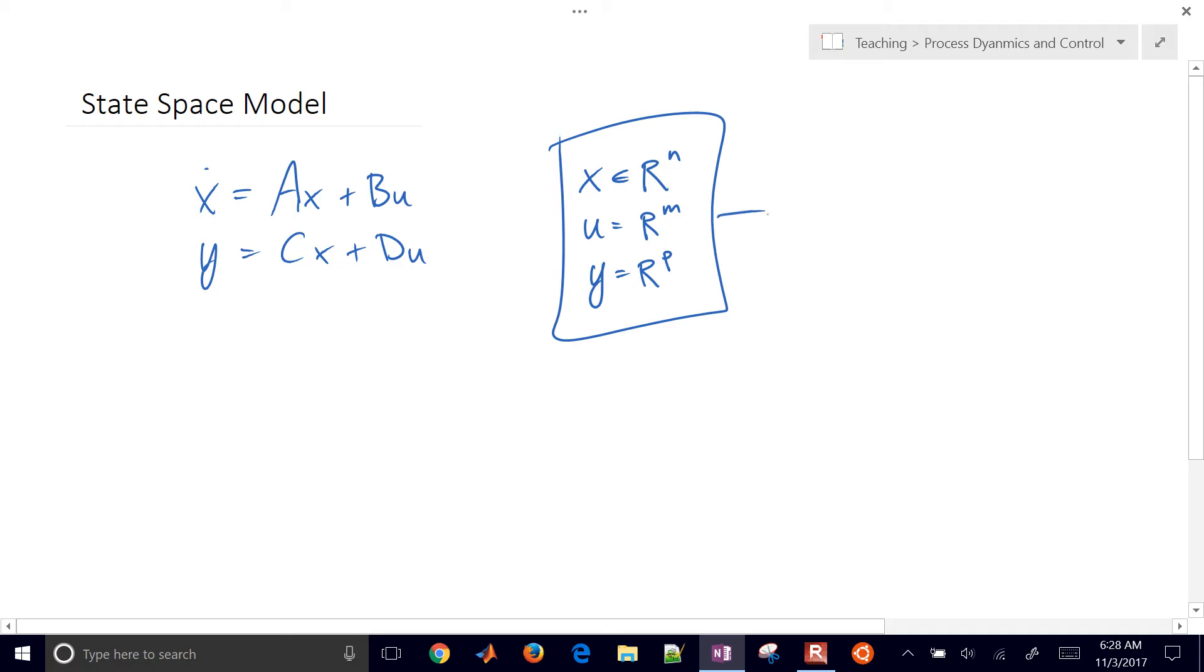This is the input vector. This is the state vector, and this is the output, a list of numbers that are going to be the outputs. And we have these matrices A, B, C, and D.